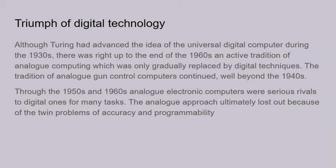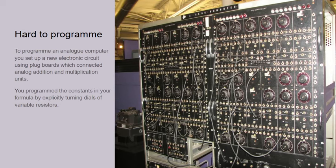Through the 1950s and 60s, these electronic analogue computers were serious rivals of digital ones for many tasks. The analogue approach ultimately lost out because of two problems: accuracy and programmability. They were hard to program. An analogue computer like this had to be programmed by rewiring it essentially. You set up a new electronic circuit using plug boards and you connected up addition and multiplication units to get a new formula.